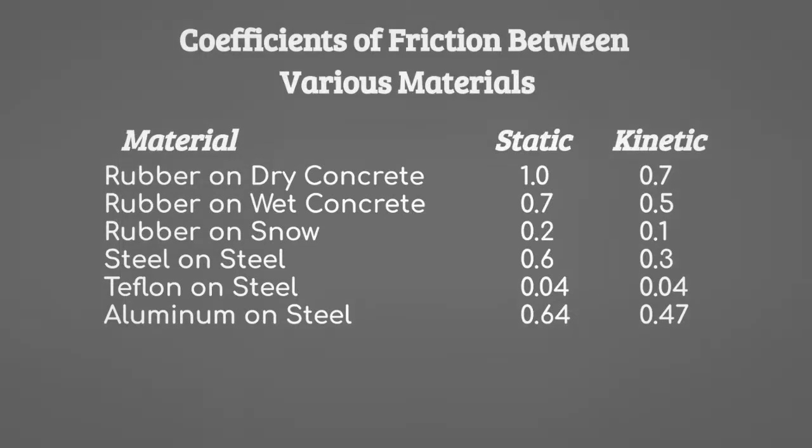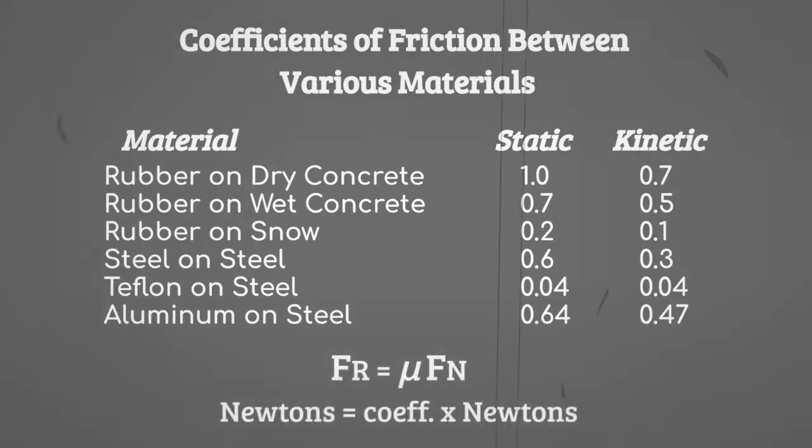When looking at this table of coefficients of friction, you'll note that automobile tires have a much higher coefficient of friction against a dry road than they do against a snowy one. A higher coefficient of friction means more friction can be produced for a given normal force. Notice the coefficient of friction has no units, as both friction force and normal force are measured in newtons.